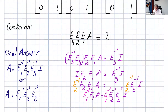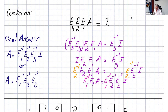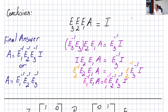Now we can isolate A. Multiply both sides on the left by E3 inverse, then E2 inverse, then E1 inverse. Each multiplication on the left cancels the corresponding elementary matrix. After all three steps, we are left with A on the left side and E1 inverse times E2 inverse times E3 inverse times I on the right.